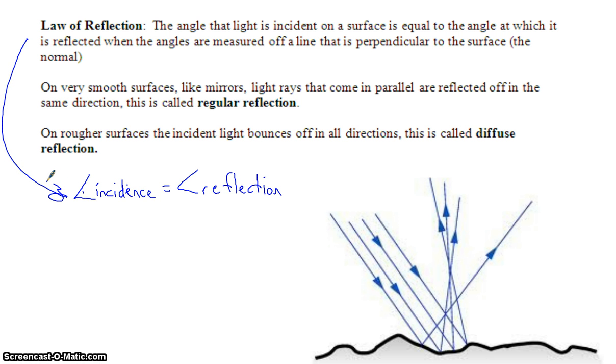Now this is for a flat surface, and the light rays come in, and they'll go out at the same angle, and this angle is measured off of the normal. So the normal is a line perpendicular to the surface.